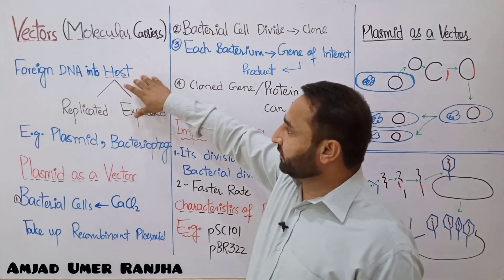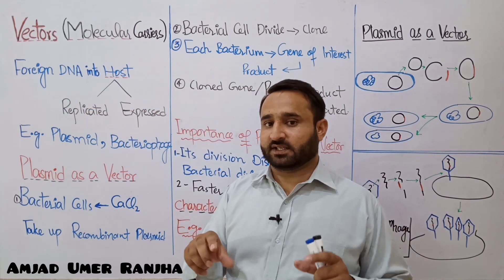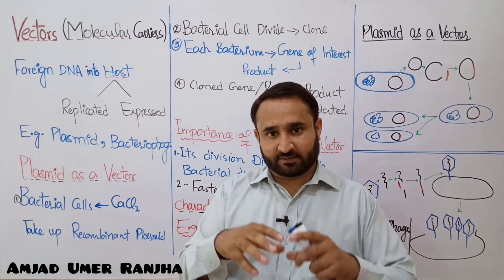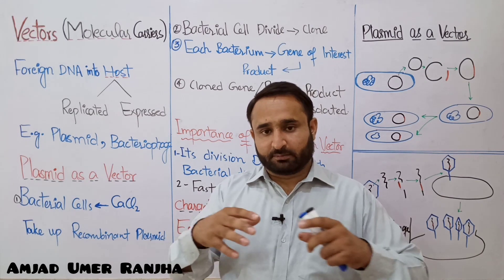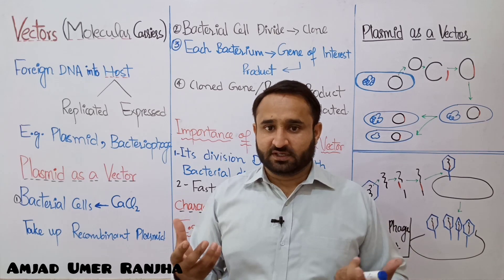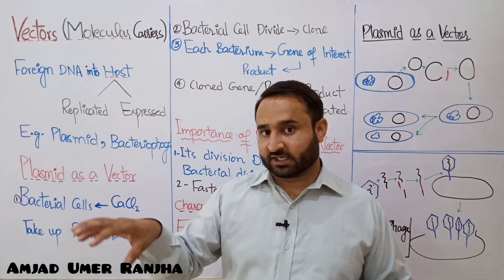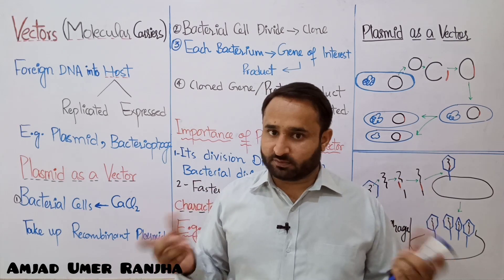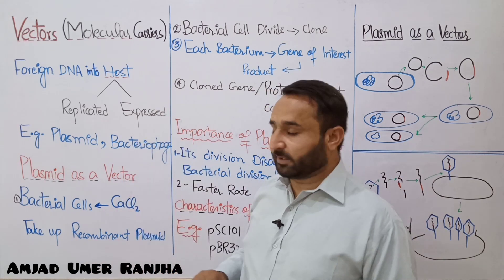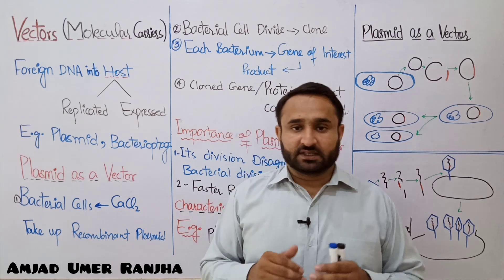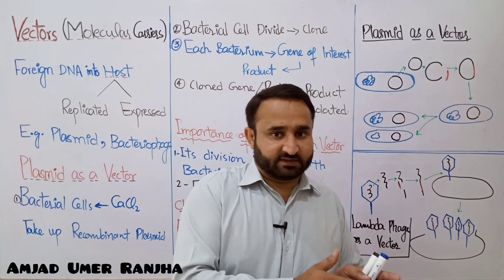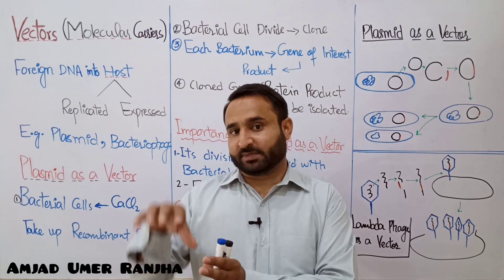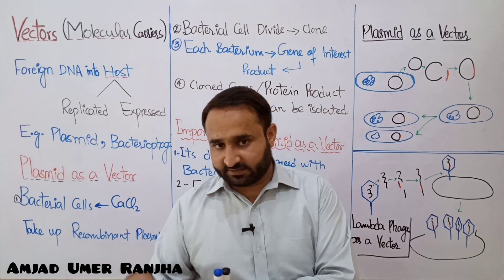Once inside the host, the foreign DNA can do two things: it can replicate, and it can be expressed. The bacterium divides by binary fission every 20 minutes, so the foreign DNA incorporated via the plasmid also doubles — then becomes four — and so on. Gene expression means: gene → RNA → protein.